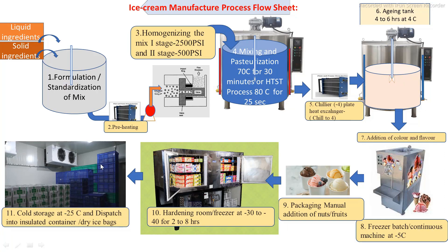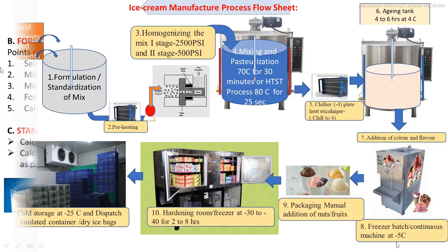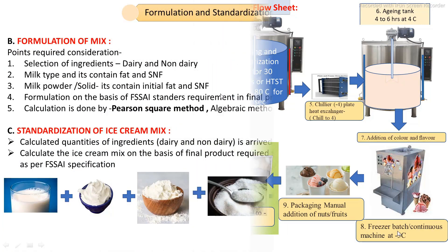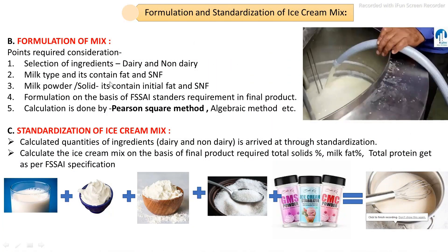After the hardening process, the product is stored in the storage room at minus 25 degrees Celsius. After that, proper secondary packaging and dispatch is carried out.